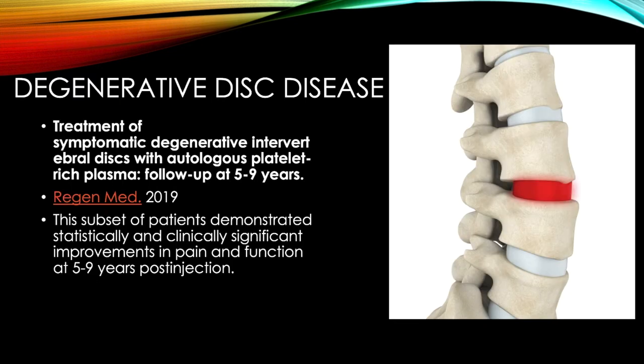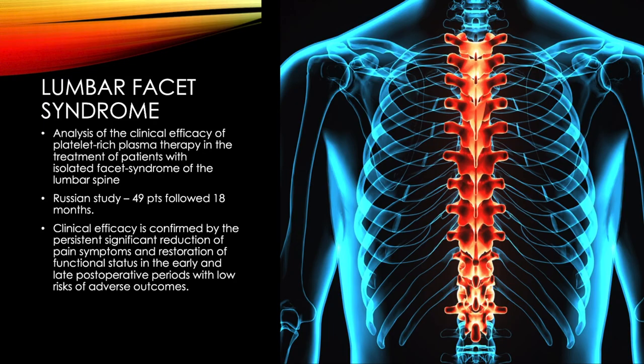For the spine, a 2019 study showed a subset of patients demonstrated clinically significant improvements in pain and function from five to nine years post-injection of PRP into the disc — remarkable long-term follow-up. For facet arthritis, a Russian study of almost 50 patients over a year and a half found persistent significant reduction in pain symptoms and increased function in early and late post-procedure periods with low complication risks.